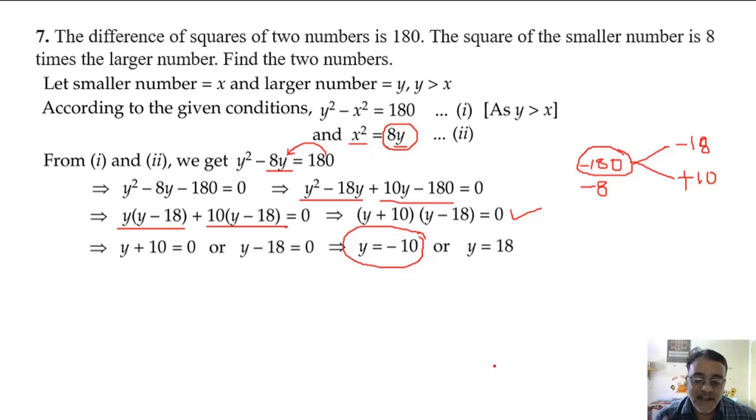But square of real numbers is always positive. So that is why y is equal to minus 10 is not possible because this value x square will become negative. So rejecting y is equal to minus 10 as x square becomes negative.